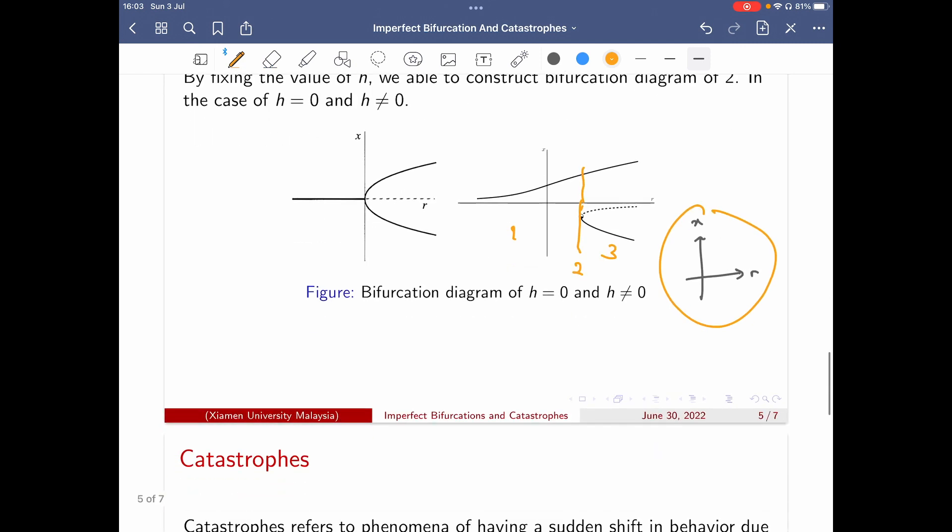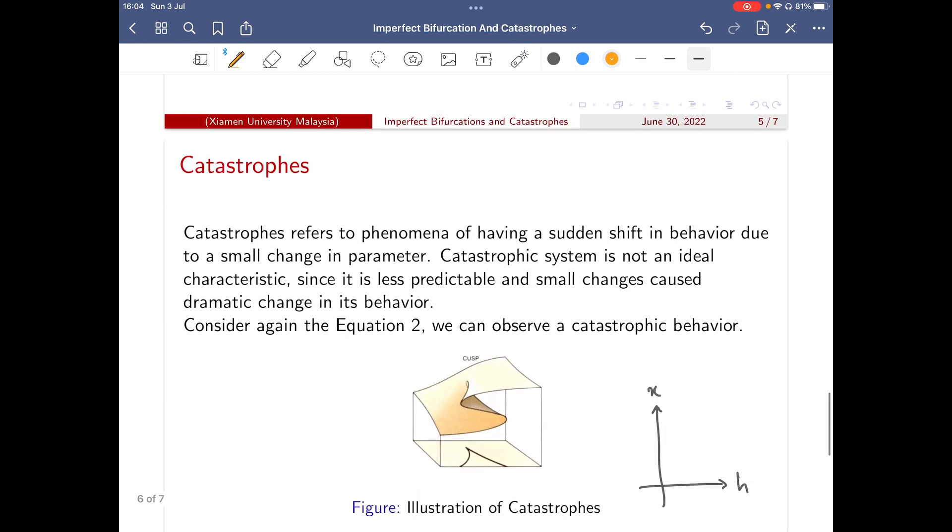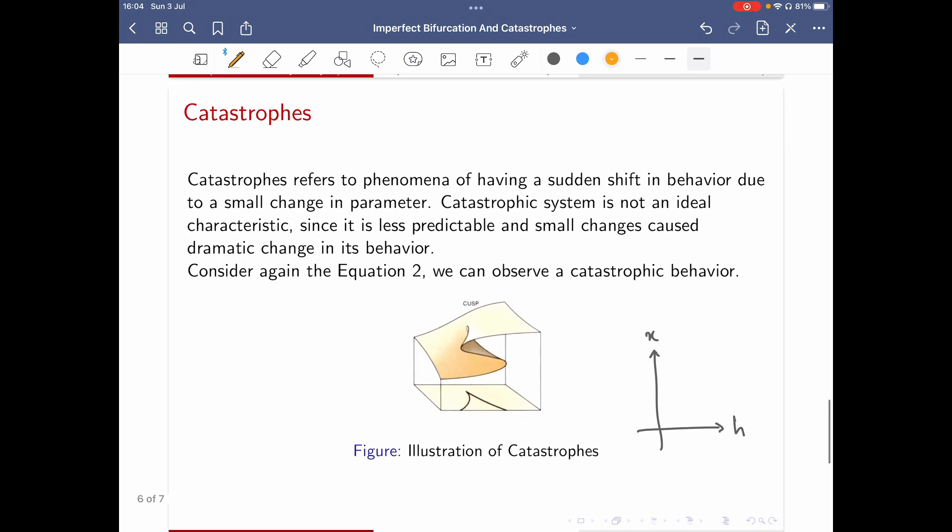So now we have to introduce another concept called catastrophes. Catastrophes refers to a phenomenon of having a sudden shift in behavior due to a small change in parameter. It is not really an ideal case since it's less predictable and a little small change will cause a dramatic change in this behavior.